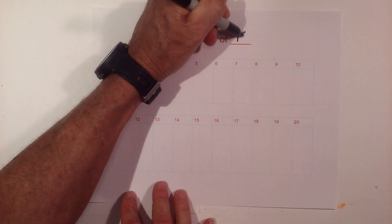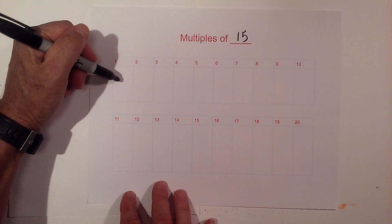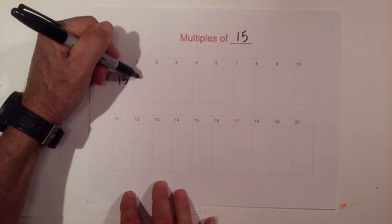Signs and the multiples of 15 to 20. Okay, so we have 15 times 1 is 15.